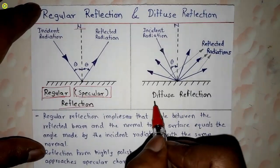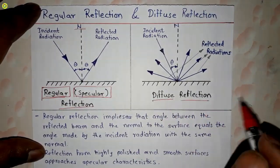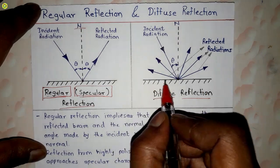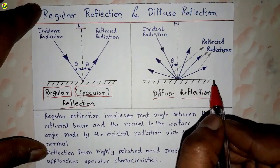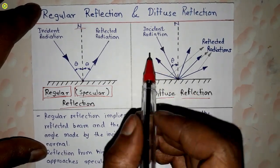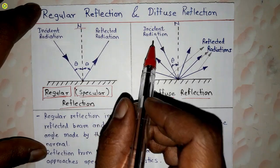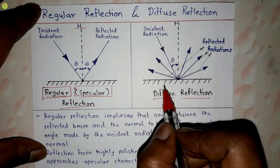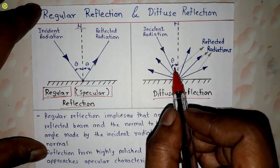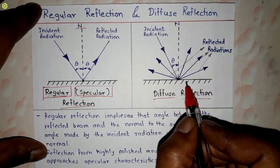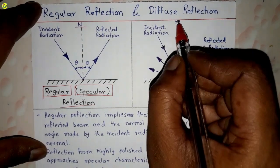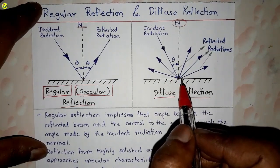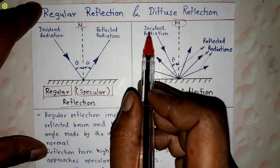Now we will see diffuse reflection. Diffuse reflection is related to a rough surface. On this rough surface we apply incident radiation, which strikes at an angle theta with the normal to the rough surface.